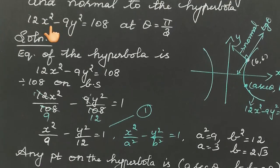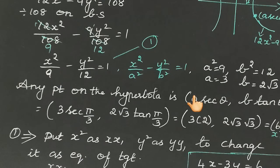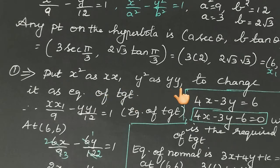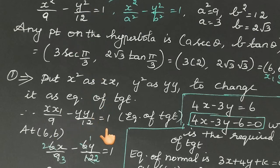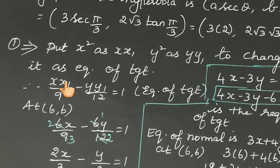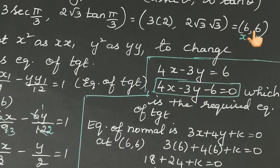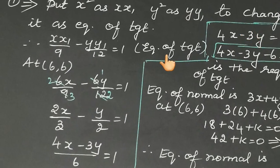To find the equation of the tangent, change the equation of the hyperbola by replacing x² with xx₁ and y² with yy₁. This gives the equation of the tangent at point (x₁, y₁). Now substitute x₁ equals 6 and y₁ equals 6 into the tangent formula, giving 6x/9 minus 6y/12 equals 1.